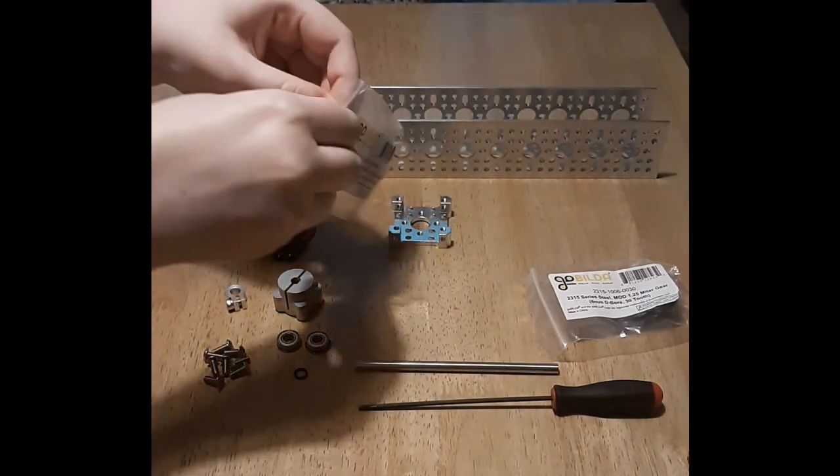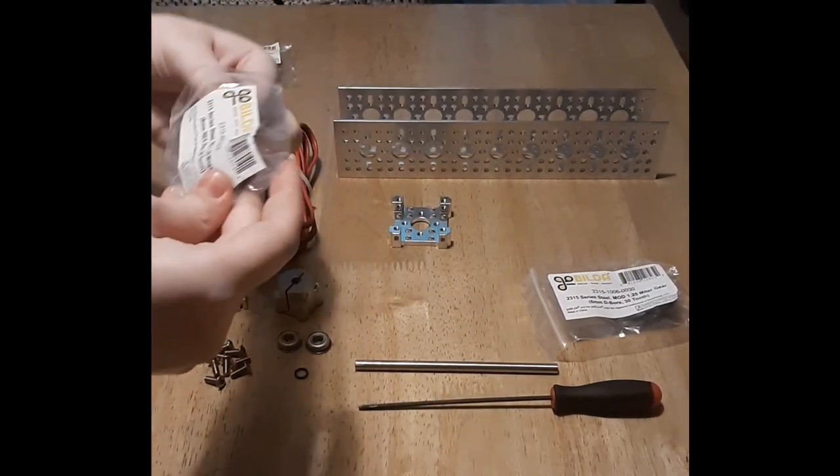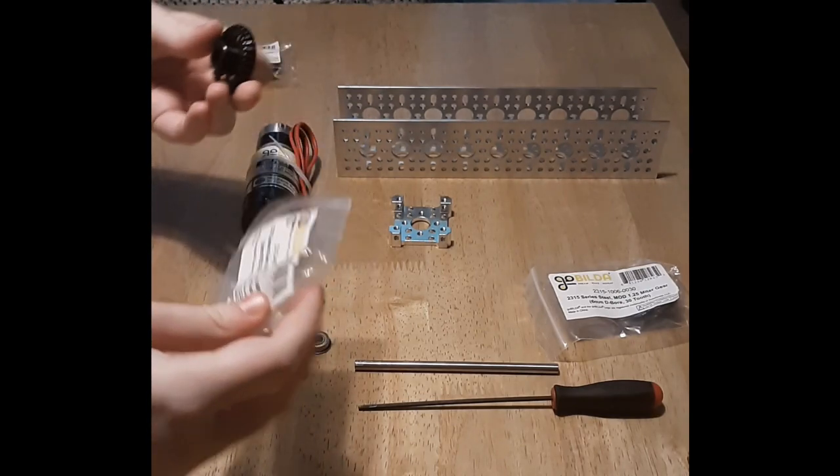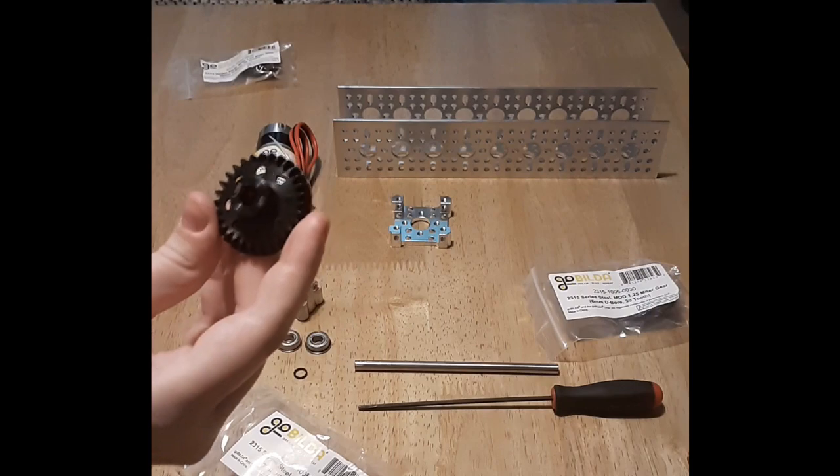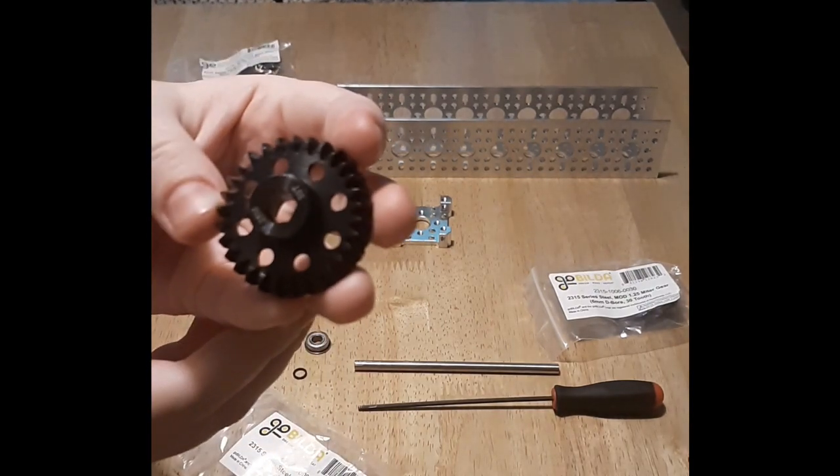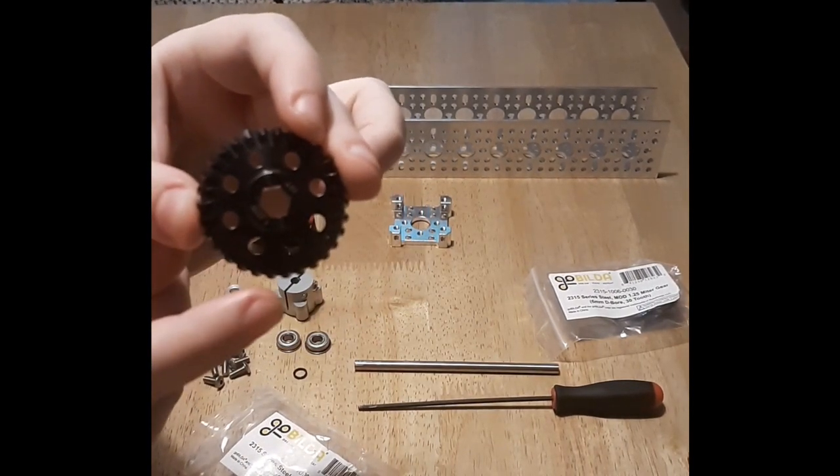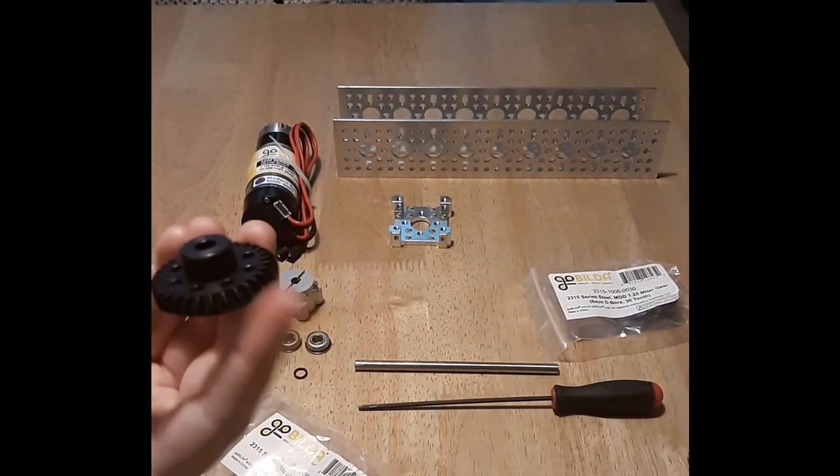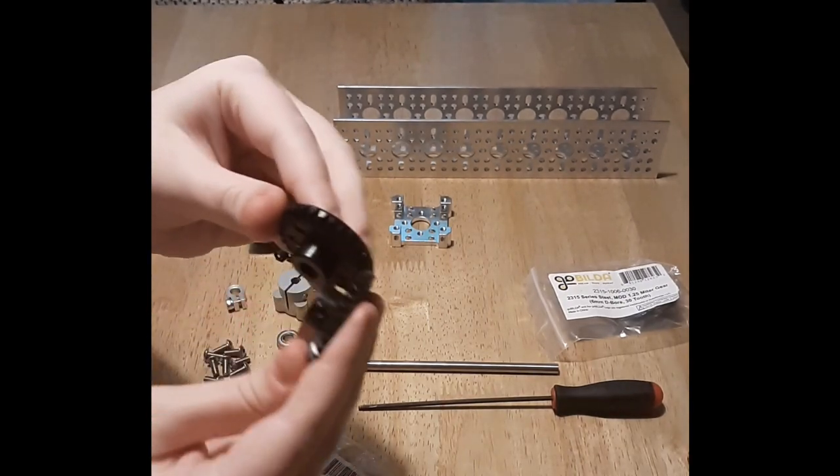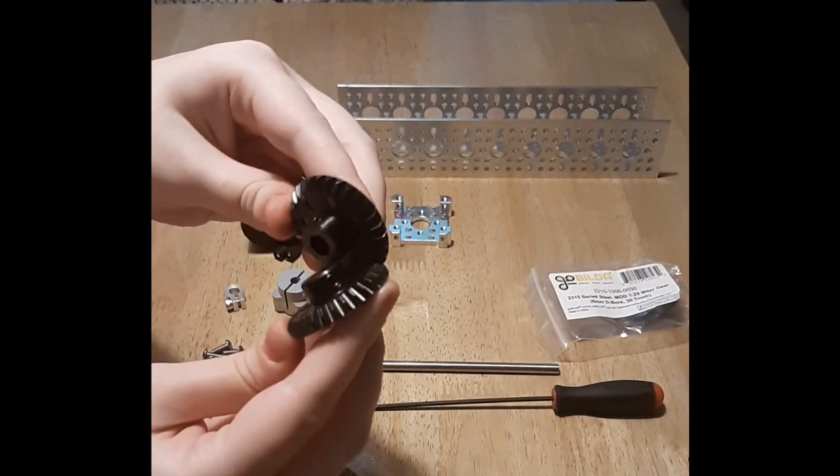This is the 8mm rex miter gear. As you can see, that is the shape. This is the D-shaft one, and as you can see, they mesh perfectly together and are beautiful.